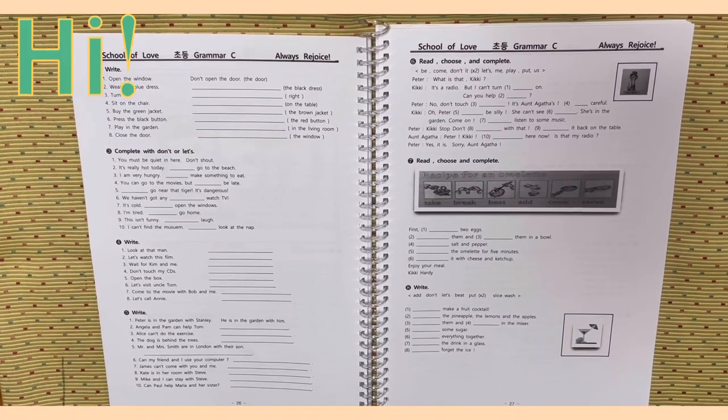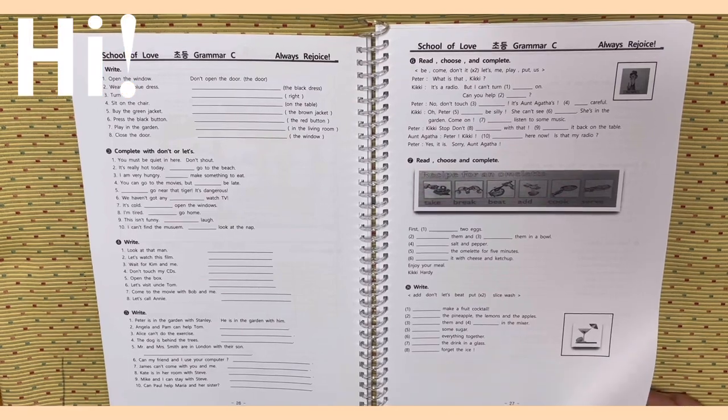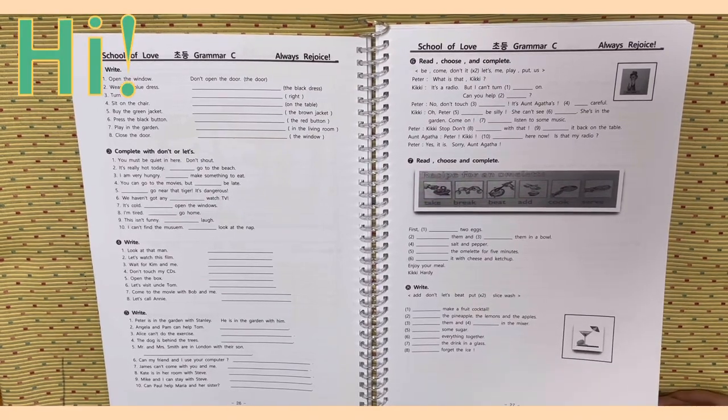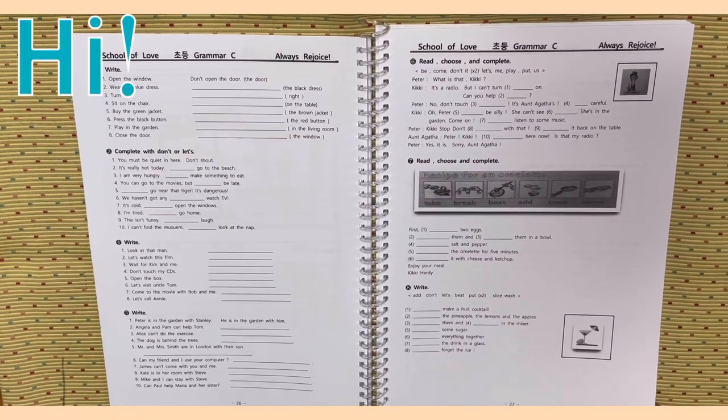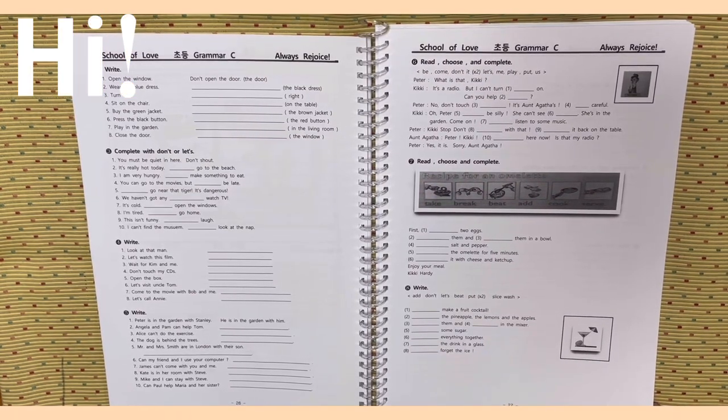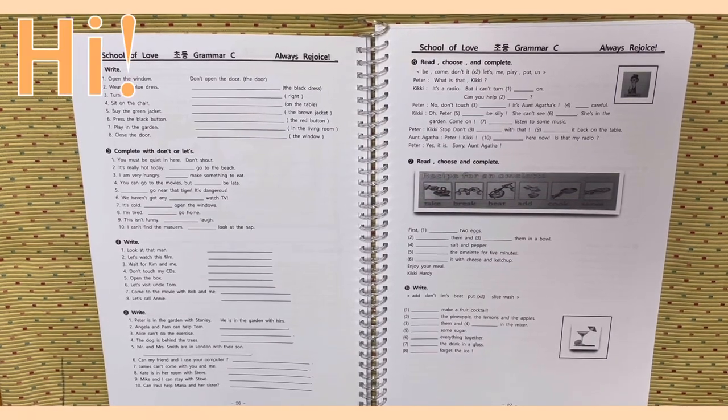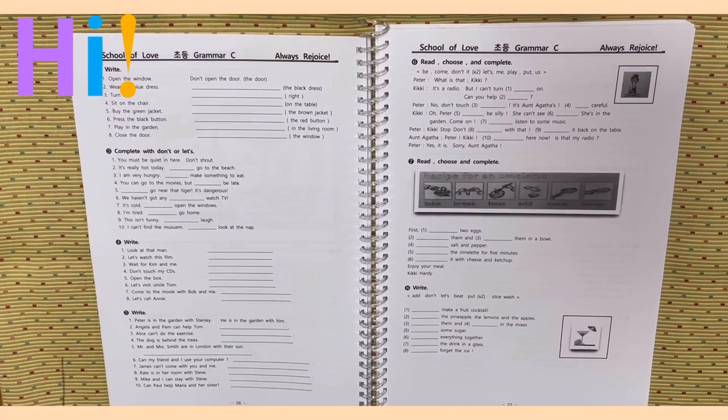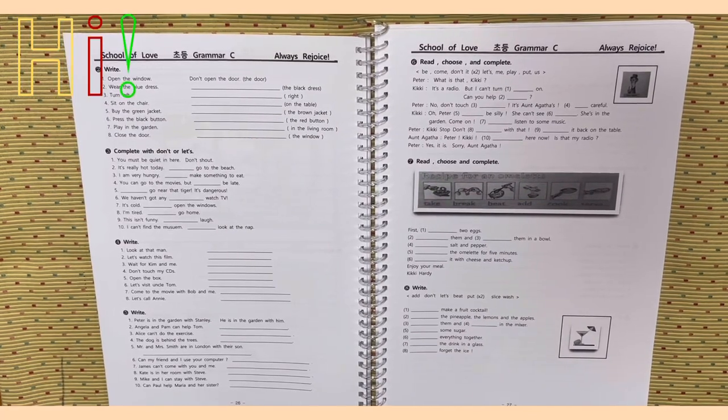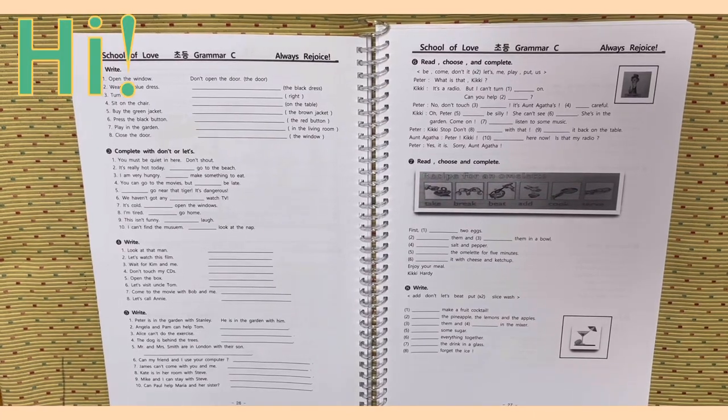Activity 8. Write. Add, don't, let's, beat, put, put, slice, wash. Number 1, let's make a fruit cocktail. Number 2, blank the pineapple, the lemons, and the apple. Number 3, blank them and blank in the mixer. 5, blank some sugar. 6, blank everything together. 7, blank the drink in a glass. 8, blank forget the ice.